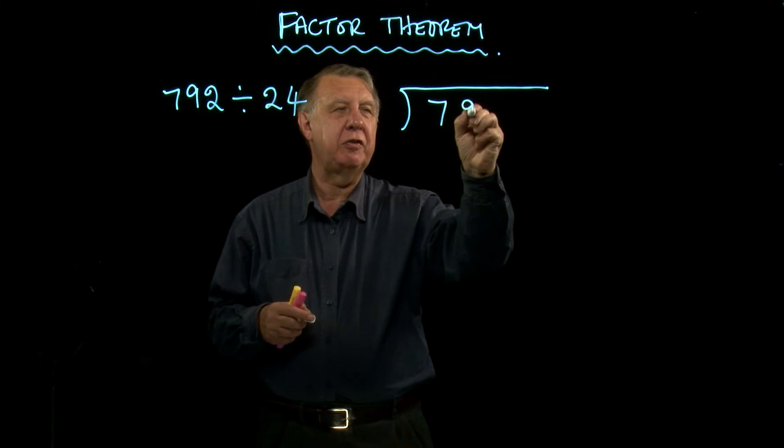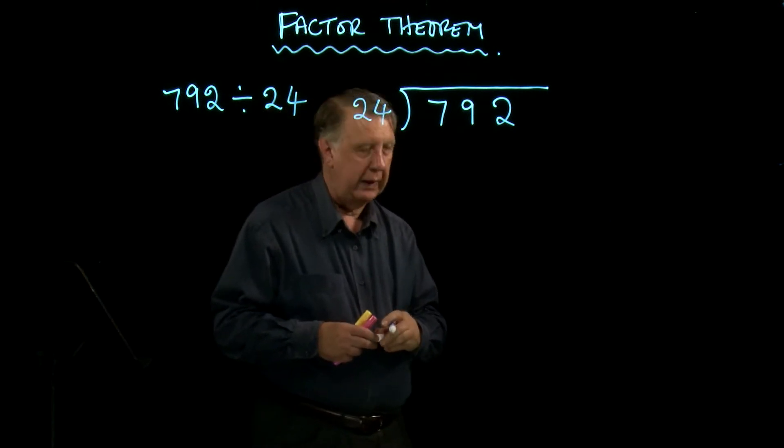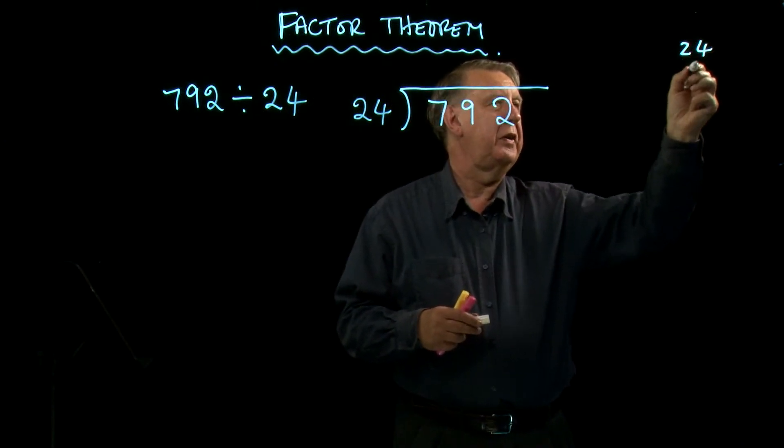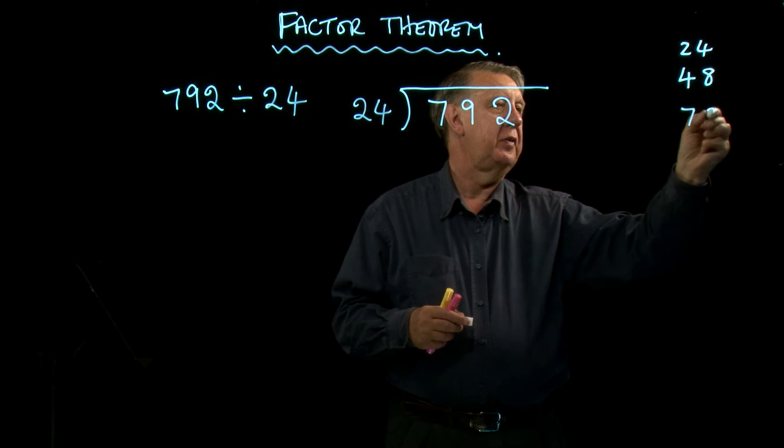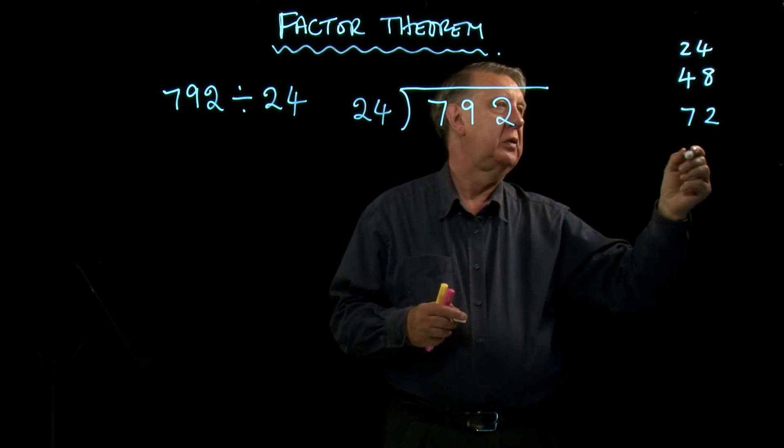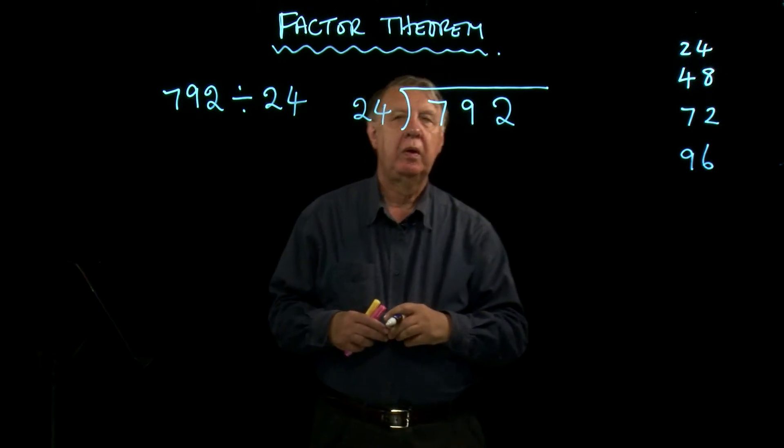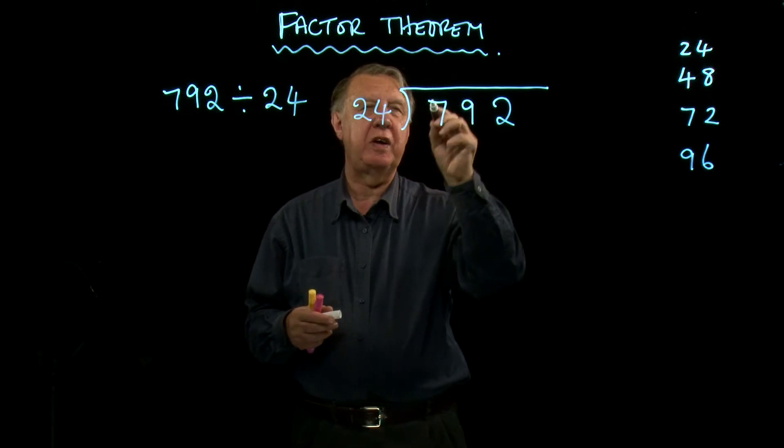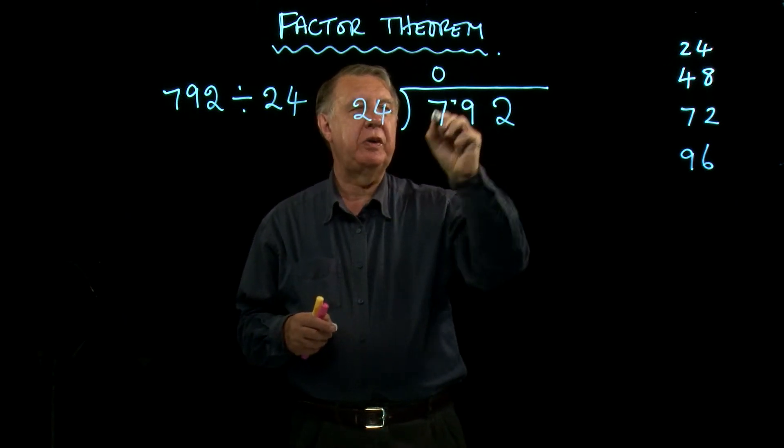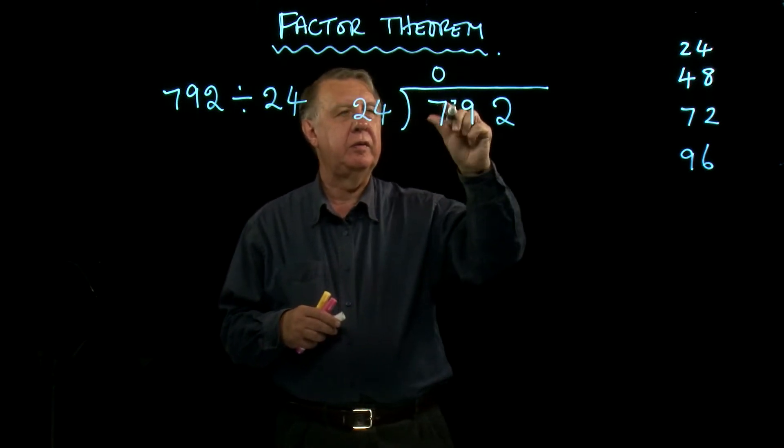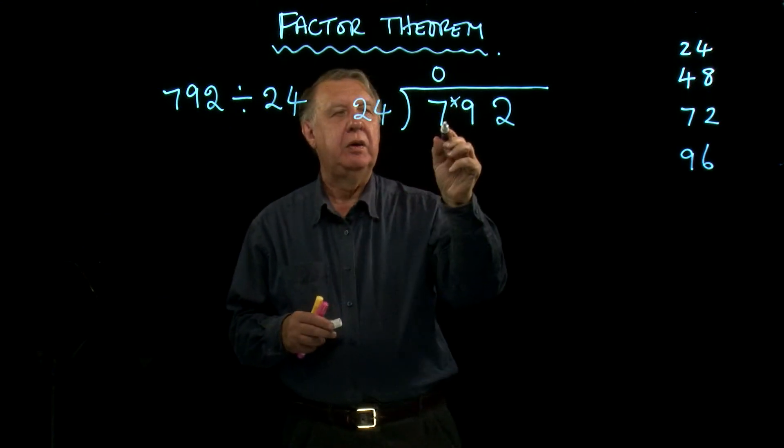So 792 divided by 24, and just to help us, let's write down a bit of the 24 times table: 48, 72, 96. You'll see why we need that in a minute. The method goes something like this. 24 into 7 doesn't go. Carry 7.